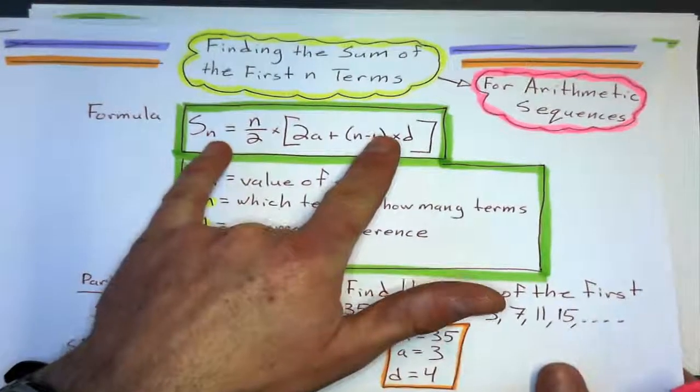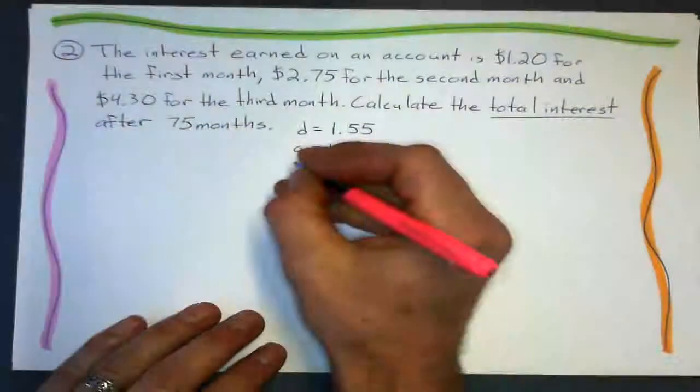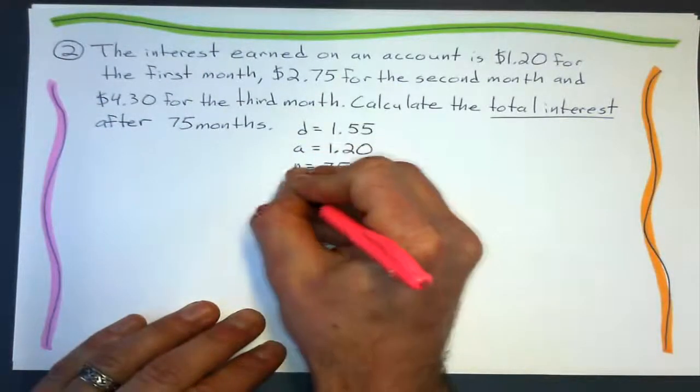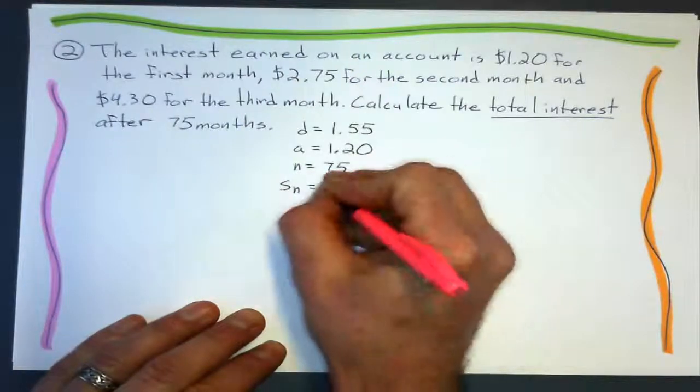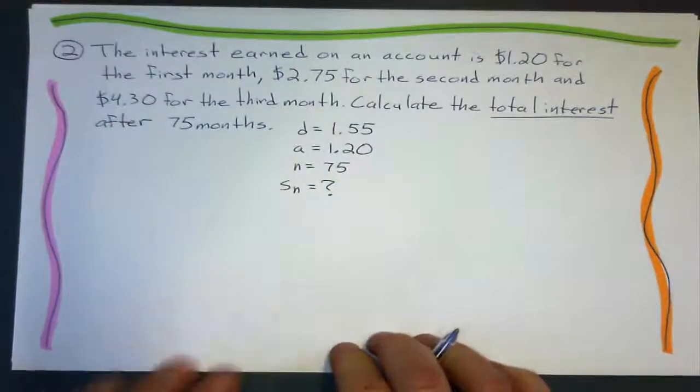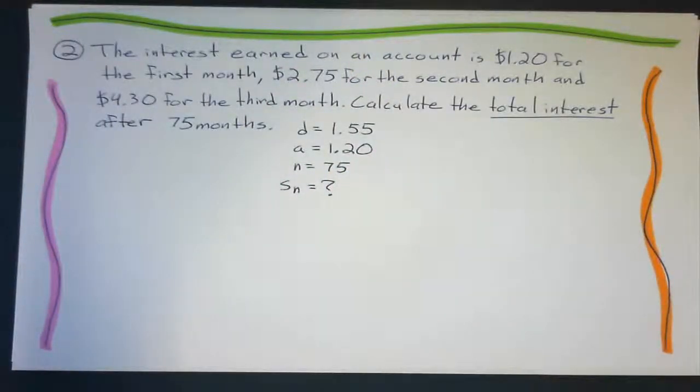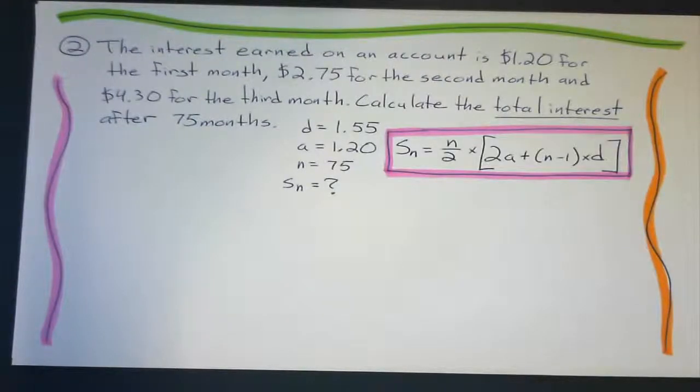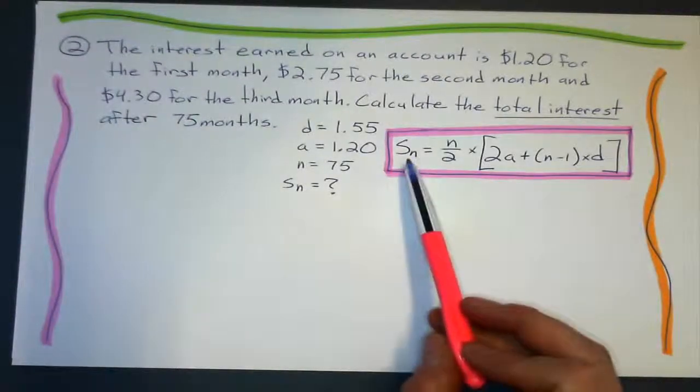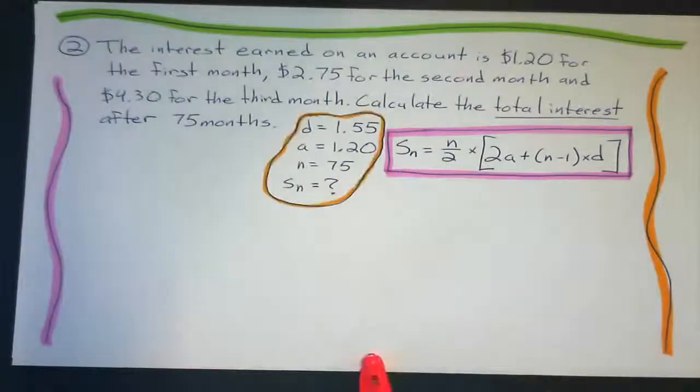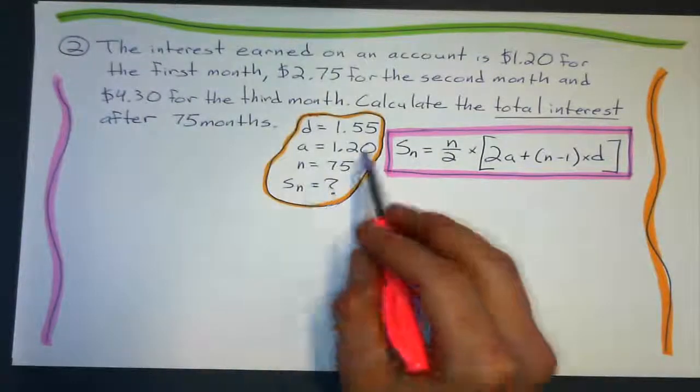N equals 75. And the sum of those first 75 months equals what? So let's get our formula down. Okay, there's our sum formula. Sum of the first N terms. So from here it turns into a substitution problem. Because I'm giving everything on this side of the formula.